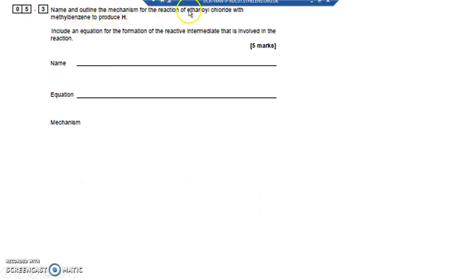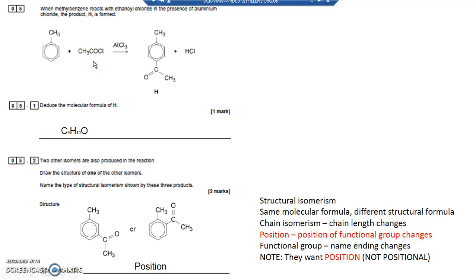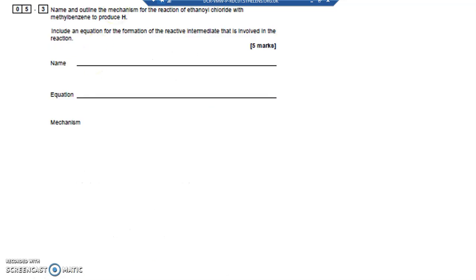Name and outline the mechanism for the reaction of ethanoyl chloride. Now ethanoyl chloride is this here, CH3COCl. A double bond CO and a Cl. A very very reactive, violent chemical, especially with anything with water, and forms white steamy fumes of hydrogen chloride.